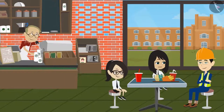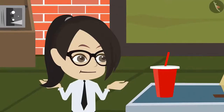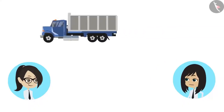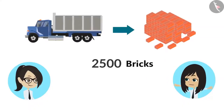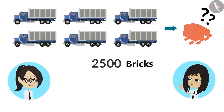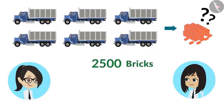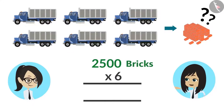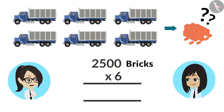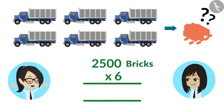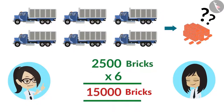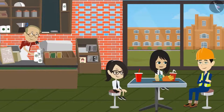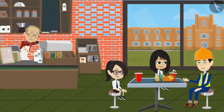Now I understand — we can count the total number of bricks. It is very easy. One truck has 2,500 bricks. So to calculate the total number of bricks, multiply 2,500 by 6. If we multiply 2,500 by 6, our answer will be 15,000. This means that in building this canteen, 15,000 bricks were used. Yes, exactly.